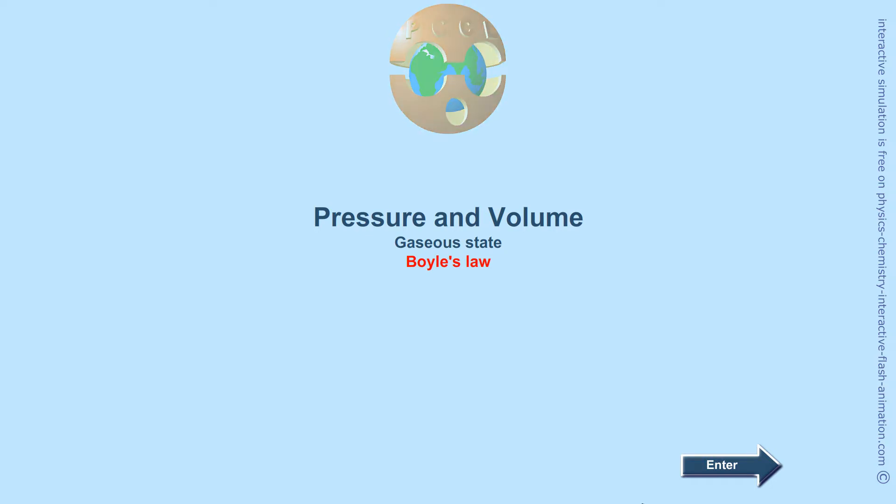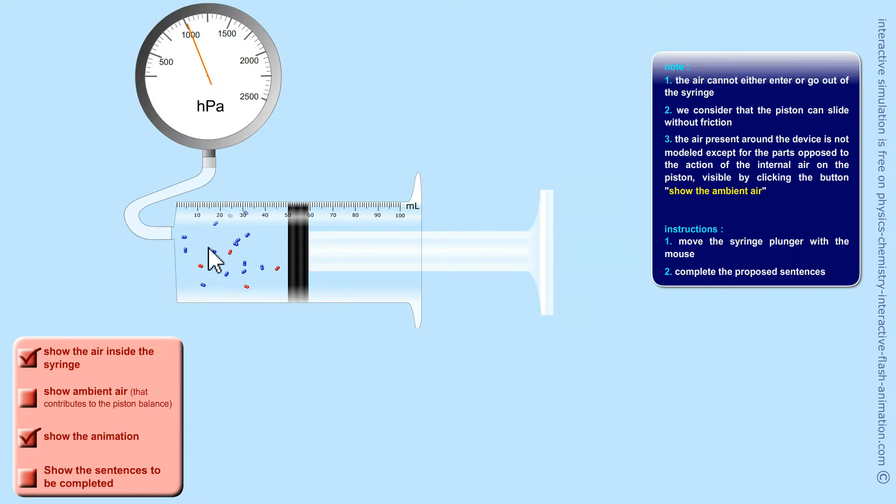Hi, welcome to the PCCL channel. A video to remember what is the gaseous state and the possible relationship between the pressure and the volume of a gas in a container, and here it will be a syringe.